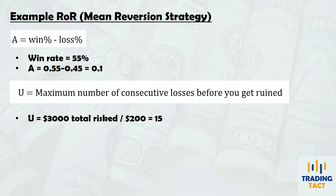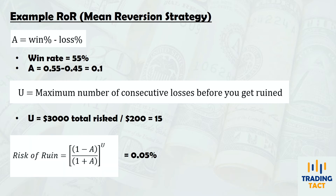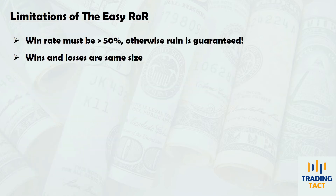Plugging in the values, this gives me a risk of ruin of 0.05. Is this an acceptable risk of ruin? This depends on your risk appetite, but anything less than 0.5 would be preferable. This method looks simple enough, but there are two major limitations.